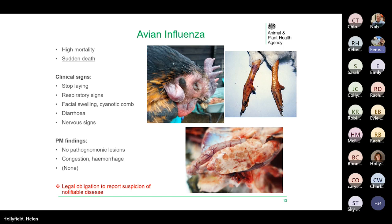There are no pathognomonic lesions for AI, and if birds have died suddenly there may be no pathology. At post-mortem you may find congestive and haemorrhagic lesions in the carcass. But if you suspect AI, you should be reporting it and not starting a post-mortem examination. The bottom photo from one of our pathologists shows necrotic lesions of the pancreas — a feature in recent outbreaks. If you see a pancreas that looks like that, it is a big red flag and you must ring the APHA field service. Remember, there is a legal obligation to report suspicion of notifiable disease, and there is a potential zoonotic risk, so wear suitable protective clothing when handling sick birds.